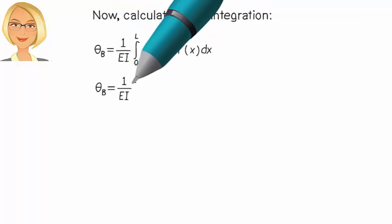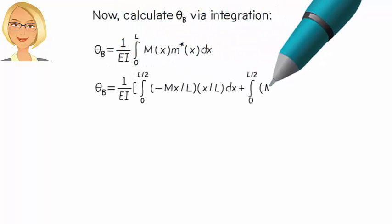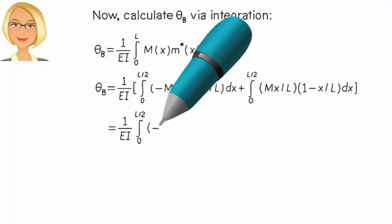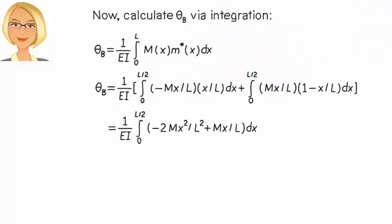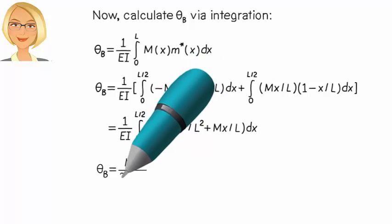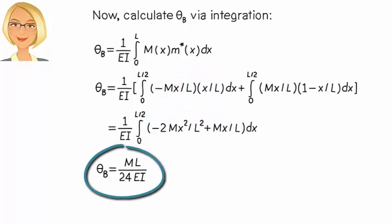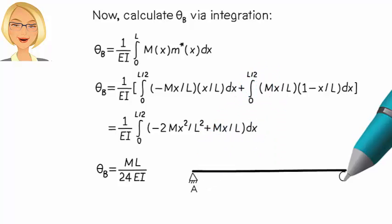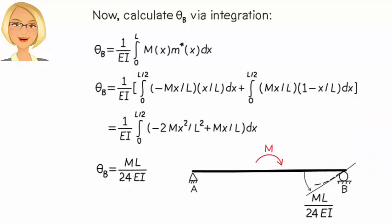Then, theta B can be written as... Since this is positive, the assumed direction for the rotation at B is correct. Joint B rotates in the counterclockwise direction by ML over 24 EI radians.